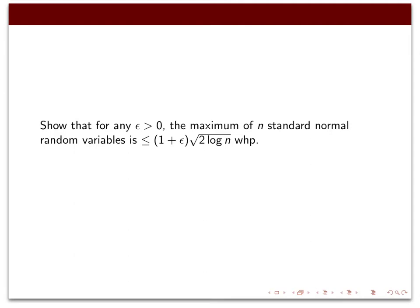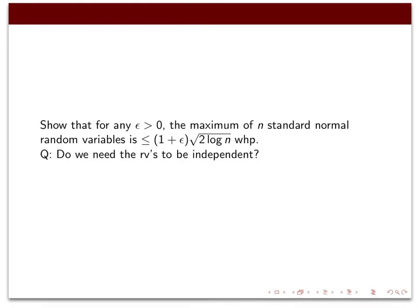For the next example, say we have n standard normal (N(0,1)) random variables and we want to show that the maximum of these n random variables is less than (1+ε)√(2 log n) with high probability — probability tending to one as n goes to infinity. You might say the problem isn't specified precisely since the dependence structure between the random variables isn't given. But as you'll see, for the first moment method dependence is irrelevant — it doesn't come into the calculation. You can apply the first moment method no matter how events or random variables depend on each other.